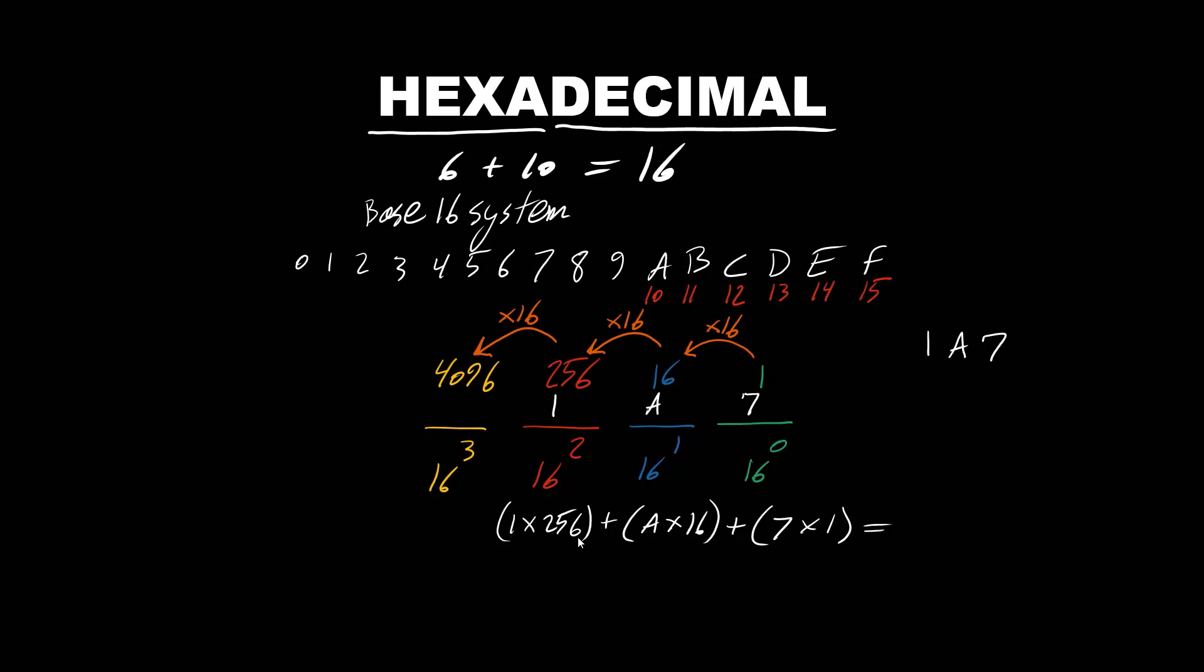1 times 256 is 256 plus A times 16. What is A? A is 10. So 10 times 16 gives us 160 plus 7 times 1 is 7. This gives us 423 in decimal number system.